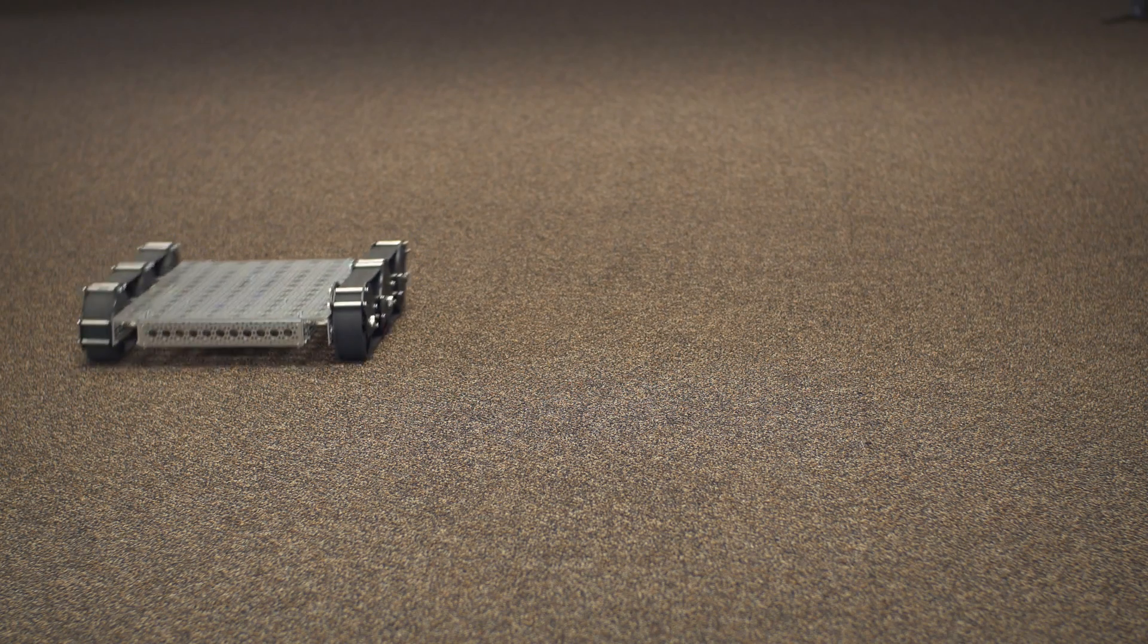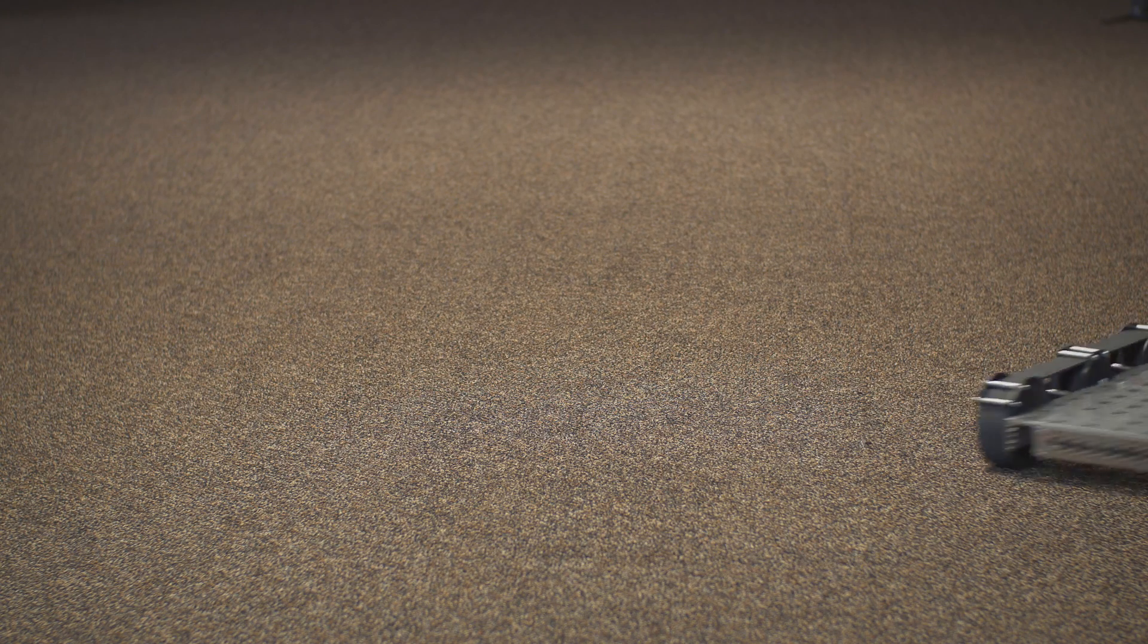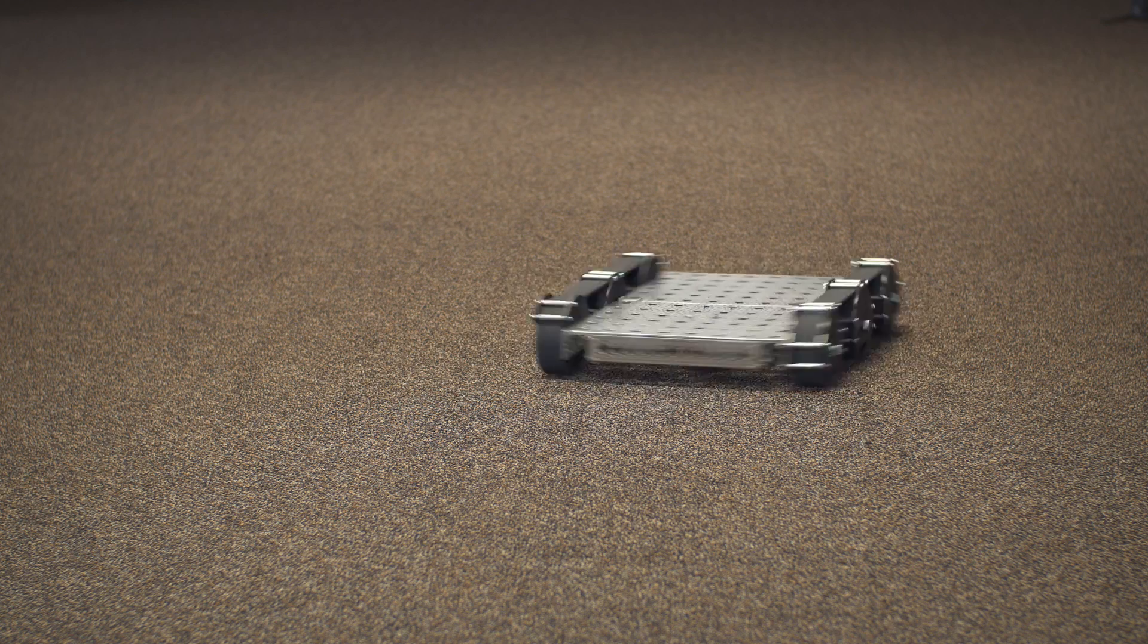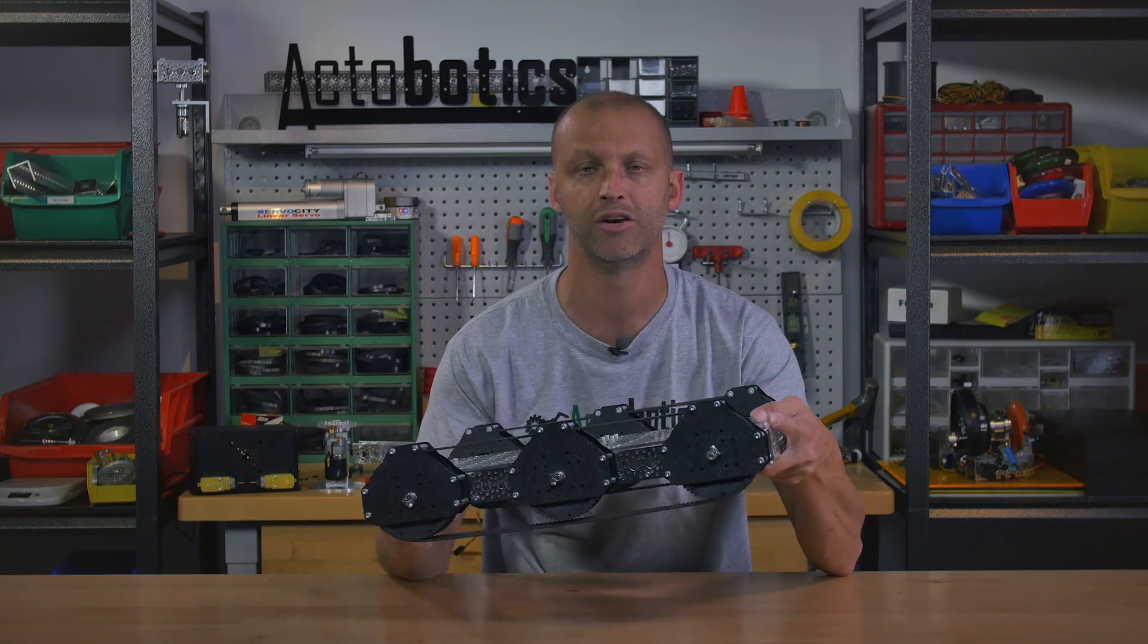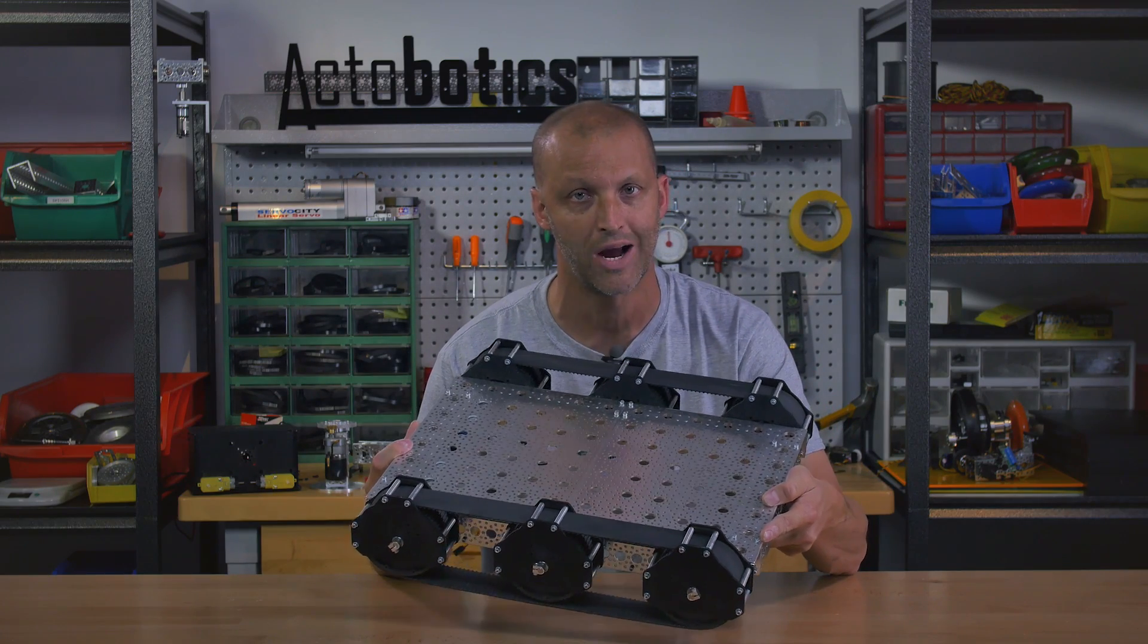To get it just dialed in just right, not only to be fun but also obviously extremely rugged and extremely durable as well as expandable. So what we have here is our brand new Agent 390 track robot kit.